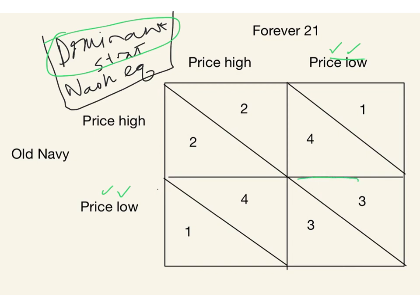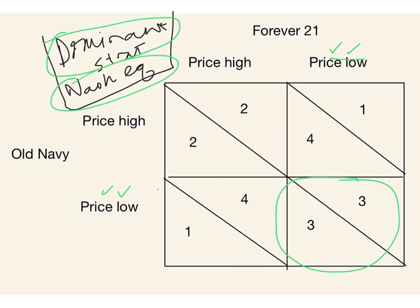Both players are going to price low, and that's going to turn out to be a Nash equilibrium. The Nash equilibrium is the equilibrium where every player, given what the other player has done, is satisfied — no player wants to change its action given the actions of everybody else. A lot of students coming from the competitive model have this misguided intuition that the market just goes to the best spot by itself — well, no, there are a lot of times it doesn't.